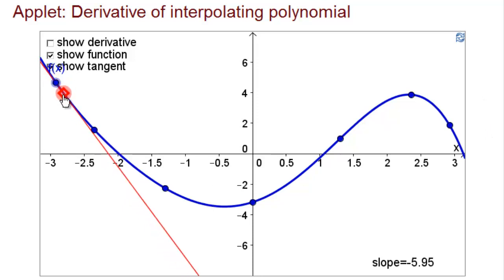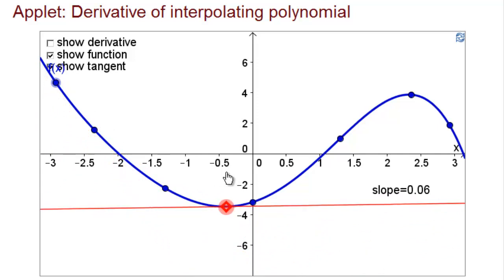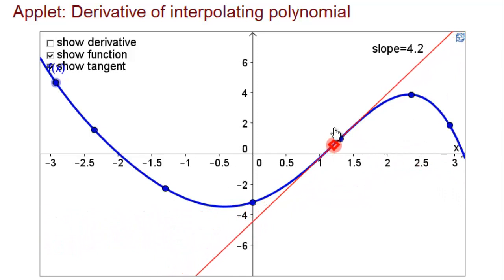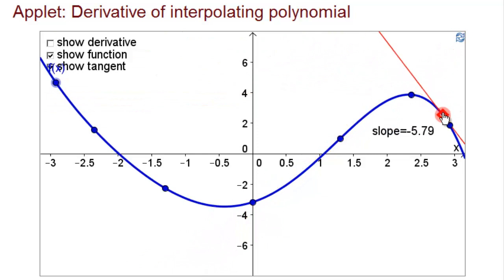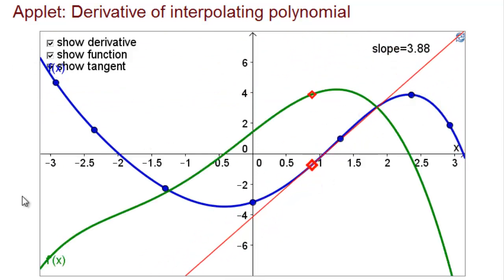The derivative should be large and negative over here, get closer and closer to 0, hit 0 right here, and then become positive — reaching its maximum positive value somewhere around here — then the derivative will get smaller again, hit 0 right around here, and become negative. Let's see what the graph looks like. Indeed, it's negative, becomes 0 right here, positive from here to here, and negative over here.